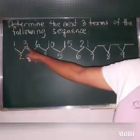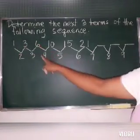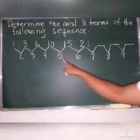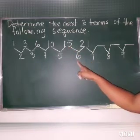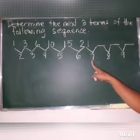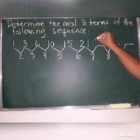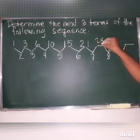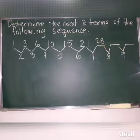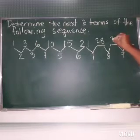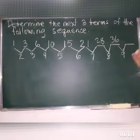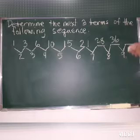So, 1 plus 2, 3. 3 plus 3, 6. 6 plus 4, 10. 10 plus 5, 15. 15 plus 6, 21. 21 plus 7, 28. 28 plus 8, 36. 36 plus 9, 45.